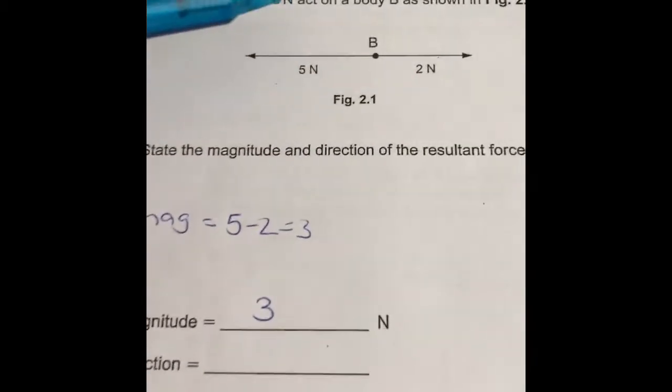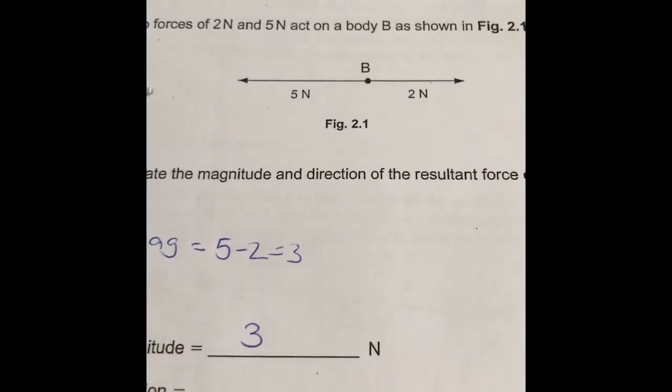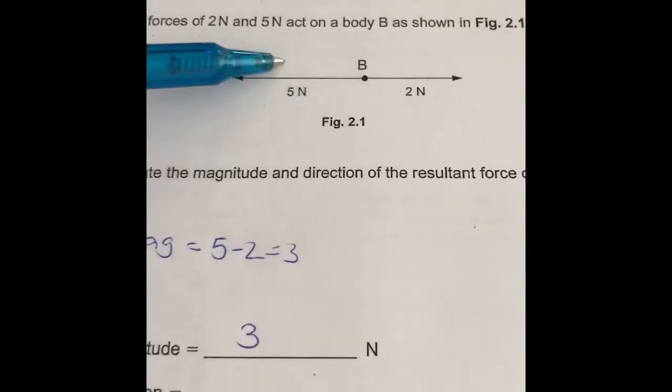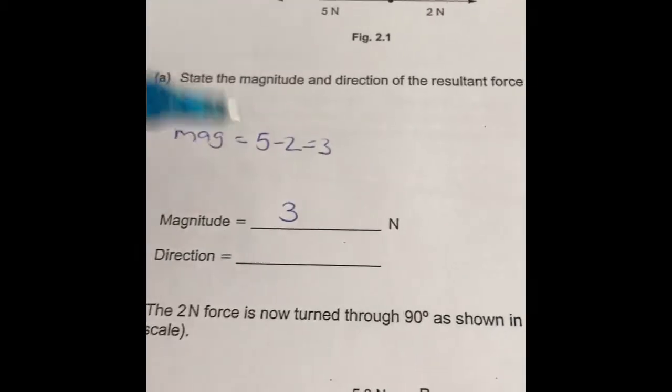So the magnitude is equal to 5 take away 2, so it's very simply 3. The direction, so we know the result is 3 newtons, but what direction is it acting in? It will always act in the direction of the bigger force. So it's going to act in the same direction as the 5 newton force, which is to the left.